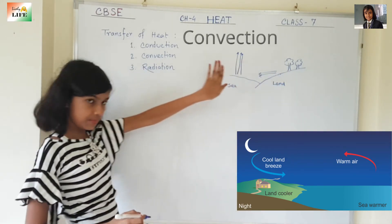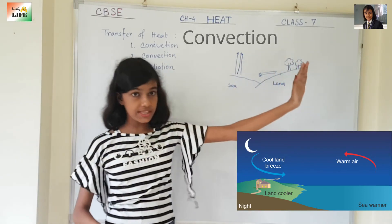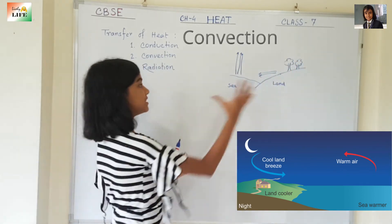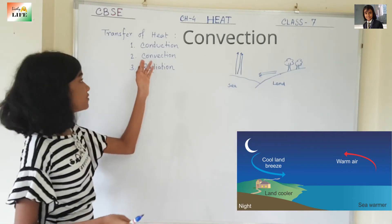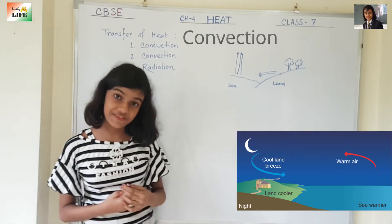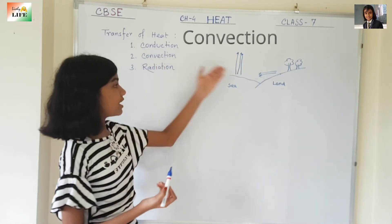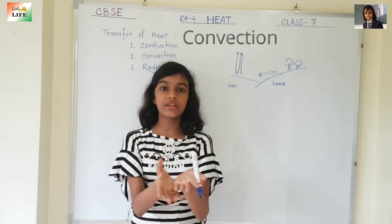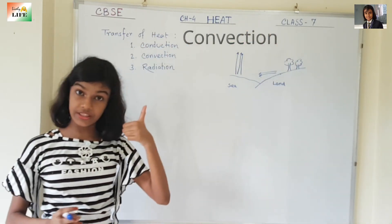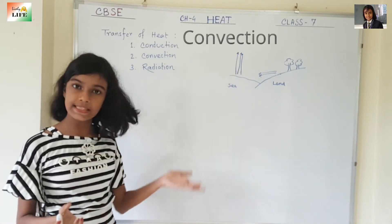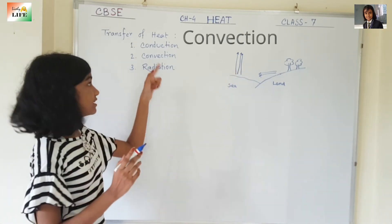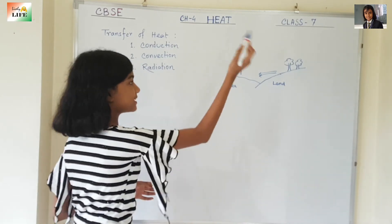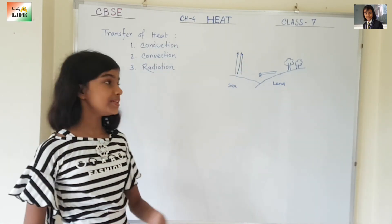So, in daytime it is sea breeze and in nighttime it is land breeze. This is a natural example of the process of convection — the hot air rises up and the cool air comes in to take its place, just like we learned in the beaker activity. Convection happens in both liquid and gas, and sea breeze and land breeze are examples of convection in air.